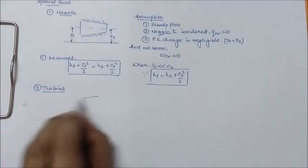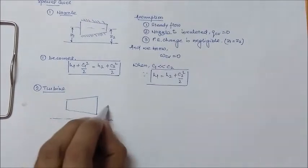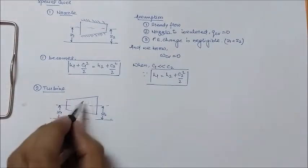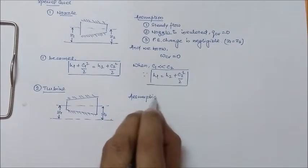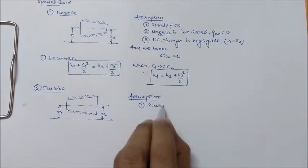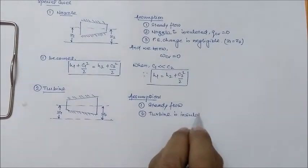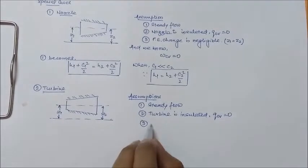The next case is the turbine. A turbine is a device which is used to generate work or power. The assumptions for a turbine are: first, steady flow; second, turbine is insulated which means Q_CV equals zero; third, kinetic energy change is negligible which means C1 is equal to C2.